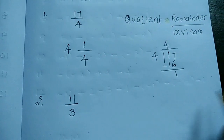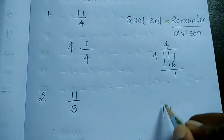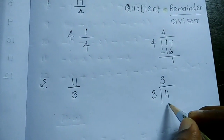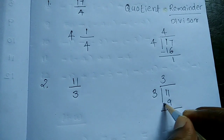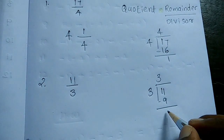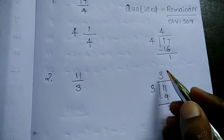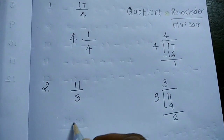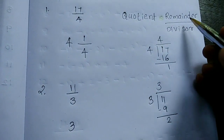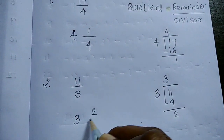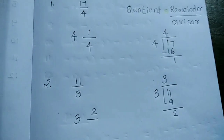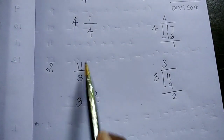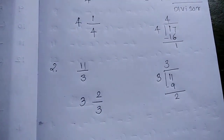Another example: 11 by 3. Divide 11 by 3. 3 threes are 9, then subtract to get remainder 2. So write the mixed fraction: quotient is 3, remainder is 2, divided by divisor 3. So the mixed fraction of 11 by 3 is 3 and 2/3.